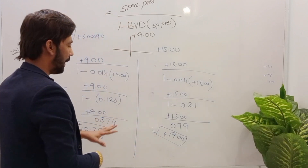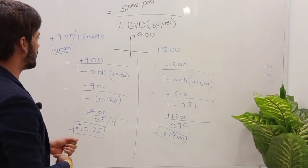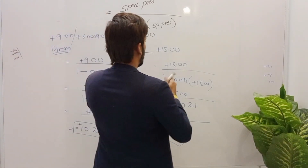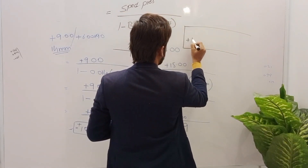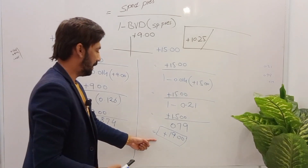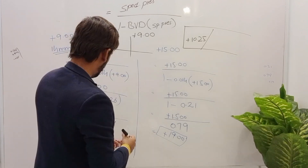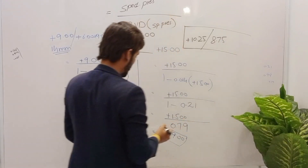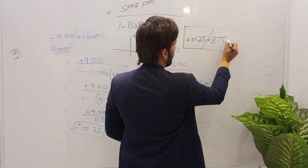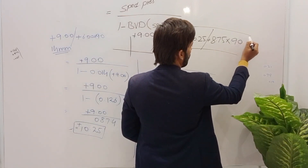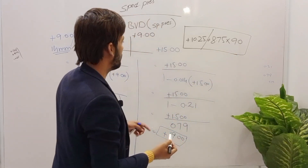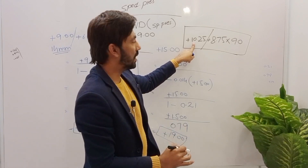For the final toric contact lens prescription: the spherical was at 90 degrees with a net value of 10.25, so spherical is plus 10.25. For the cylinder, we move from 10.25 to 19.00, which is a difference of 8.75. We are moving from lesser plus to greater plus, so the cylinder sign is plus. The axis remains 90 degrees. Final prescription: +10.25 / +8.75 × 90.